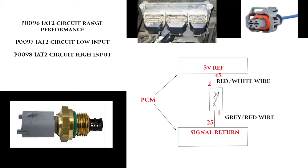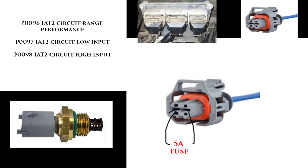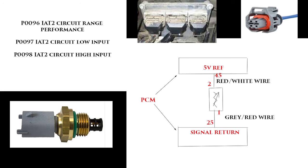Now we're going to move on to P0098. The first test is to create a little jumper wire with a 5-amp fuse on it, where you'll jump between the two pins on the intake air temperature sensor connector. I'll throw up a picture of what to do. You'll turn your key on, run your self-test, and by doing that you should get a P0097. If you get that P0097 after putting the jumper wire in and checking codes, then you have an intake air temp sensor that's bad.